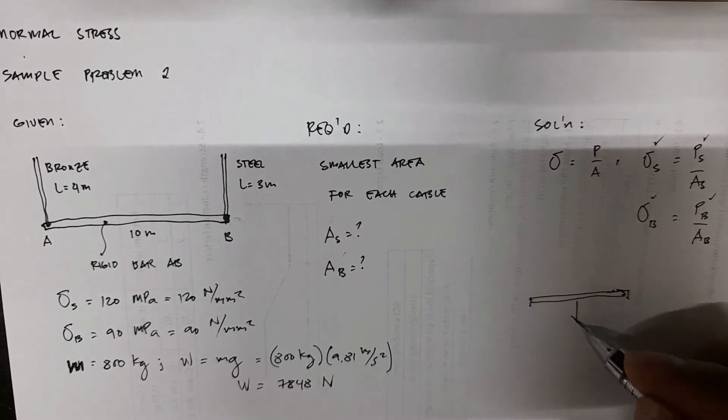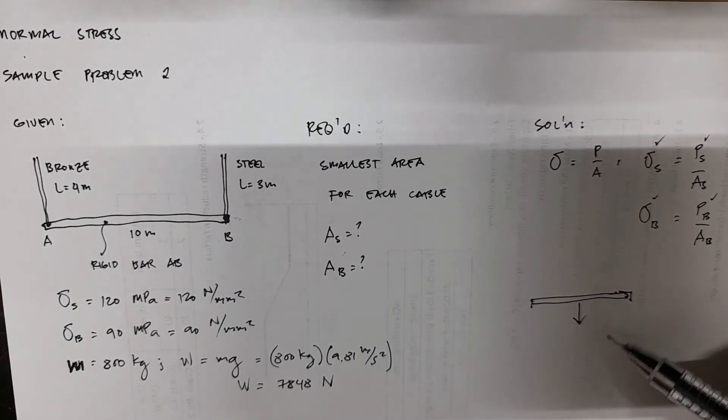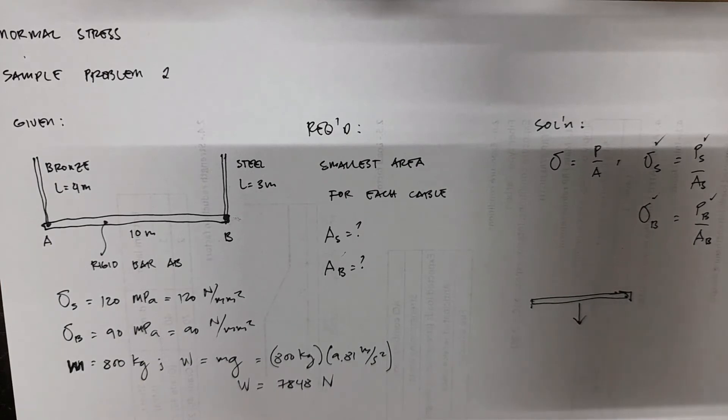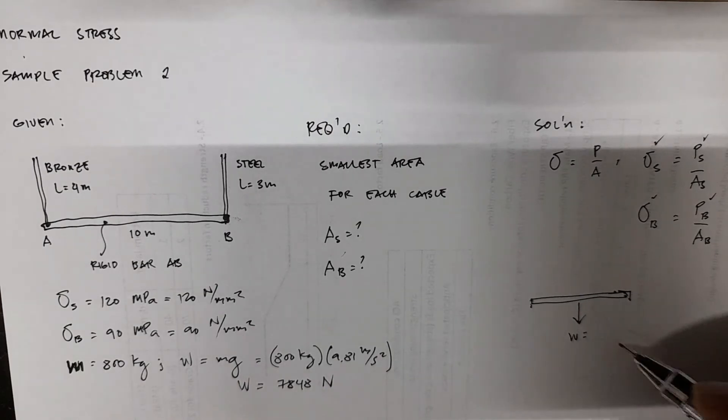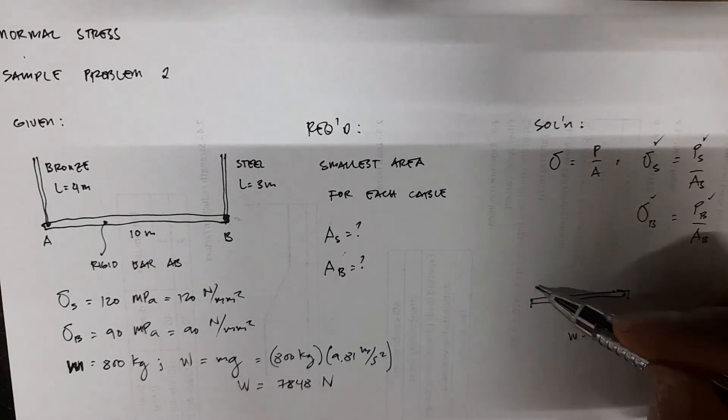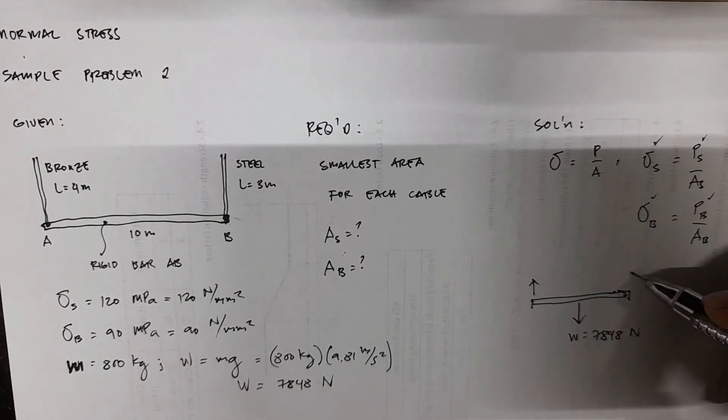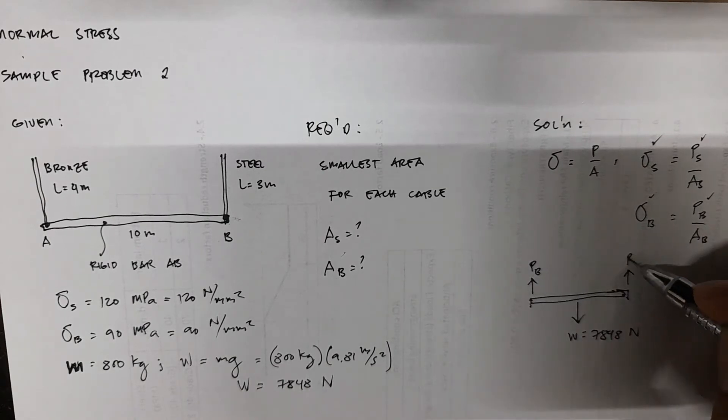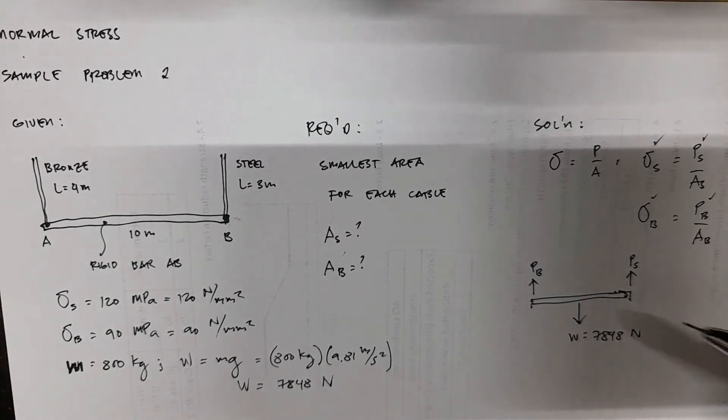You have the weight here. Of course, in your statics, when you have a symmetrical area, your weight is always concentrated on the middle, midsection. So this is W, which is equal to 7848 newton. And then you have the forces, PB and PS. So these are the forces, internal forces in your bronze and steel.